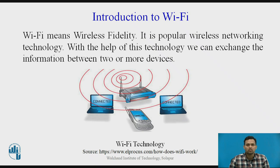Now we will see Introduction to Wi-Fi. Wi-Fi means Wireless Fidelity. It is a popular wireless networking technology, and with the help of this technology, we can exchange information between two or more devices. Wi-Fi requires three main things: Radio Signal, Antenna, and Router.